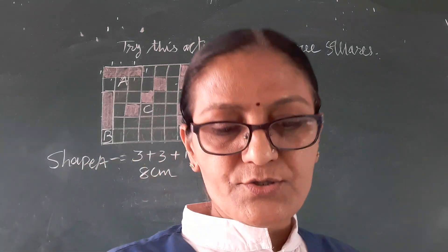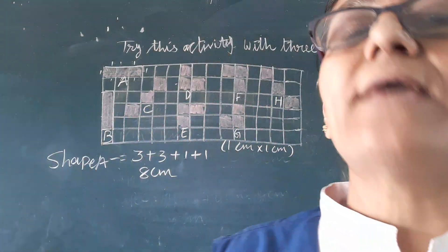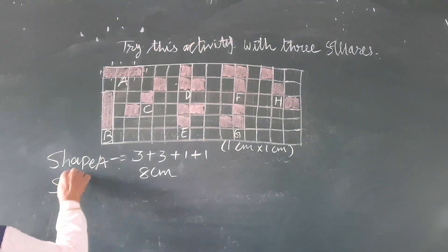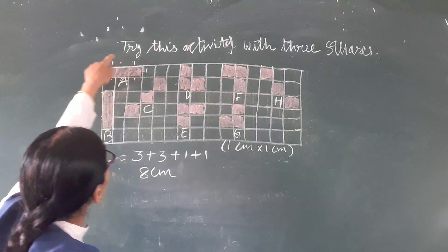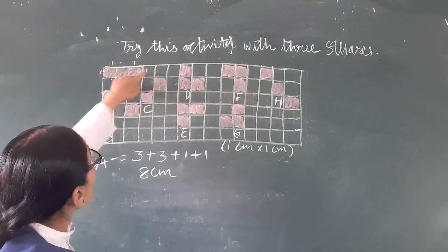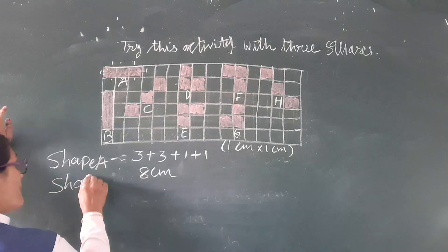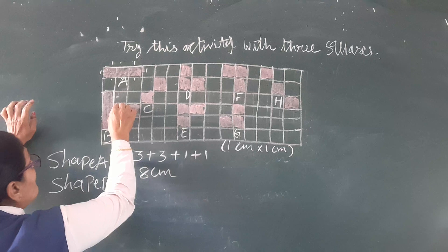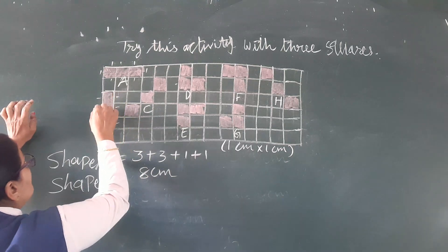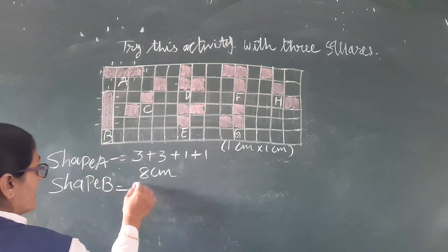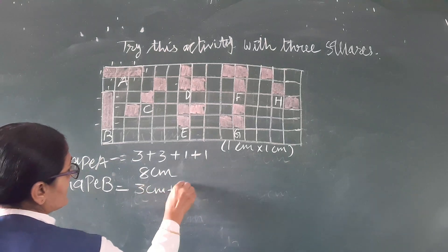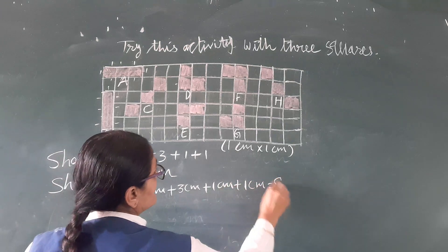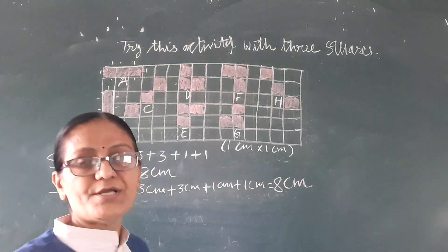Shape B has the same measurement. The boundary of shape B: counting 1, 1, 1 means 3 on one side; 4, 5, 6, 7, 8 total. For shape B boundary: 3 cm plus 3 cm plus 1 cm plus 1 cm equals 8 cm for boundary B.